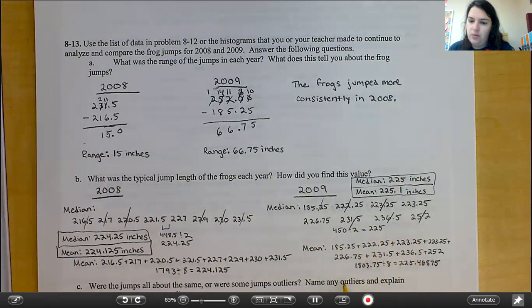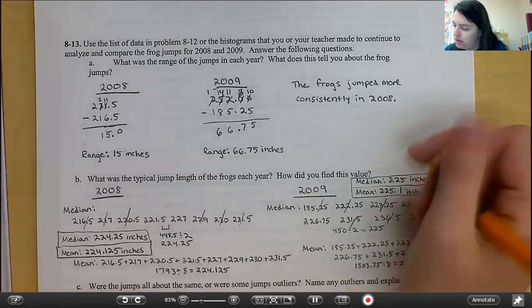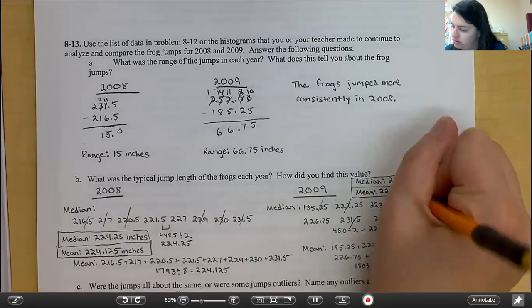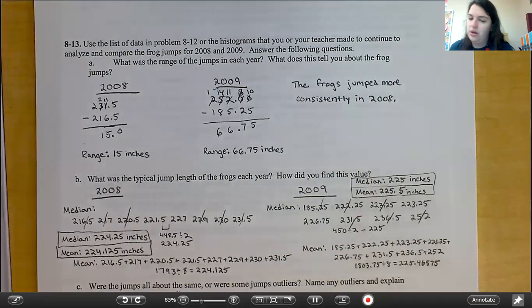For the mean, you want to add them all together, divide by how many data points there are, which is eight, and you get 225 with this long decimal. That should actually be 225.5.